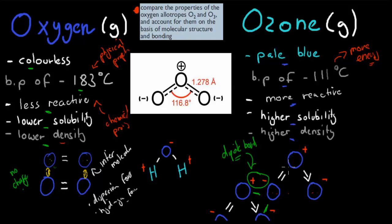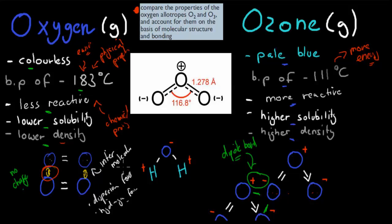So between ozone molecules we have dipole-dipole forces plus dispersion forces — three dispersion forces because there are three atoms within the molecule. Whereas between oxygen molecules, we only have dispersion forces; there's no charge because it's a straight molecule, so we don't have any dipole-dipole interactions. That means we have more types of intermolecular forces in ozone than in oxygen, and we have to invest more energy to break those bonds. That's why ozone's boiling point is -111°C as opposed to oxygen's -183°C.